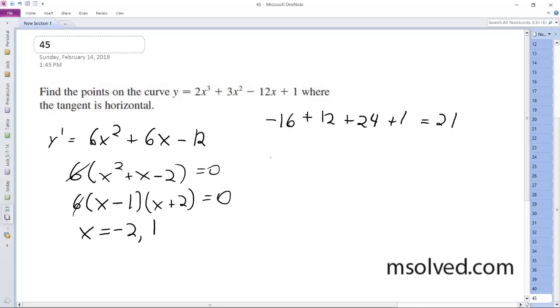And then for 1, you get 2 plus 3 minus 12 plus 1, which is negative 6. So you end up with negative 2, 21, and 1, negative 6. That's it.